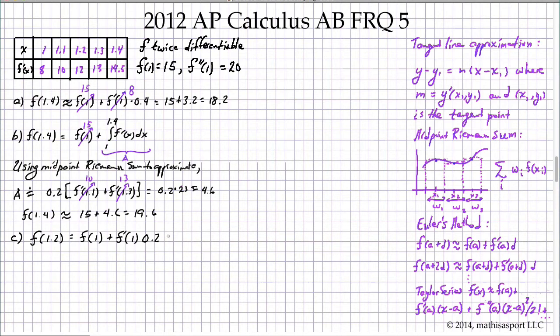So f of 1.2 equals f at that known value at 1 plus f prime at 1 times the step size 0.2. This is an approximation. Well, f of 1 is known to be 15, f prime of 1 is 8. So now we have f of 1.2 as 15 plus 8 times 0.2, which is 1.6, and that's 16.6.